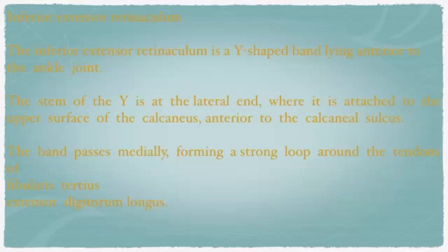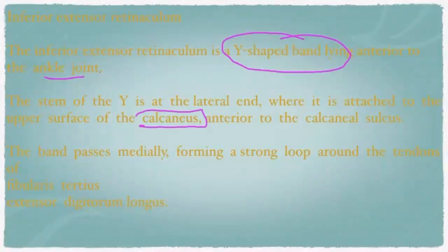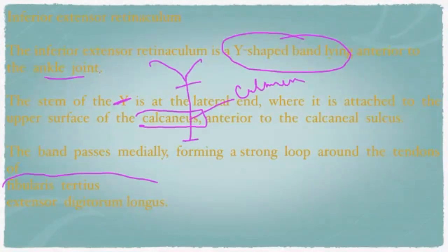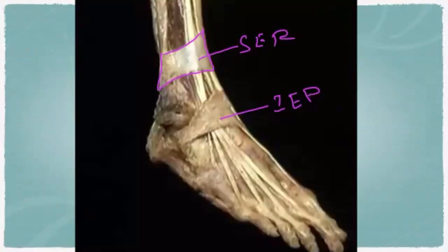The inferior extensor retinaculum is a Y-shaped band lying anterior to the ankle joint. The stem of the Y is at the lateral end, where it is attached to the upper surface of the calcaneus, anterior to the calcaneal sulcus. The band passes medially, forming a strong loop around the tendons. In the cadaver specimen, the superior extensor retinaculum and inferior extensor retinaculum can both be identified, with the stem attached to the calcaneum.